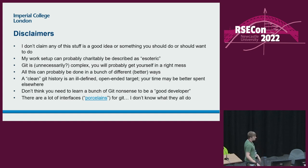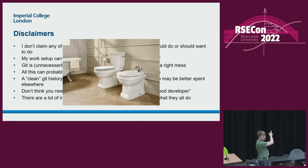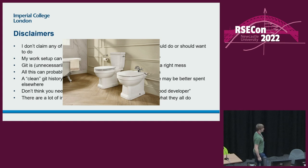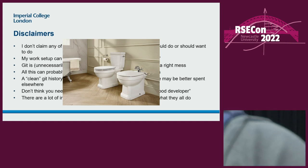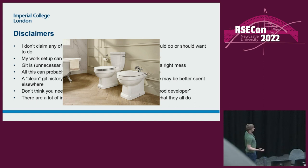One interesting side note: you come across the term 'porcelain' for Git. I've only ever heard this in the Git world. And it literally just means this: the metaphor is the idea of porcelain that goes in front of plumbing. So you have Git plumbing, which is the internals of Git, and then you have the interface to that plumbing, which is porcelain. I find it a very vivid image.